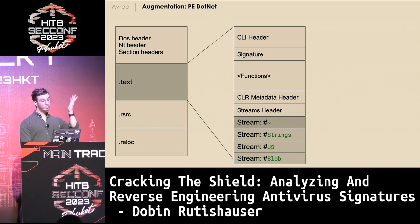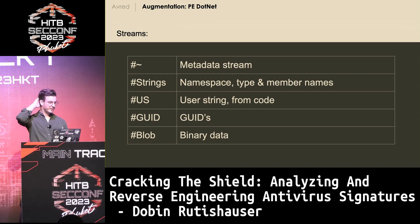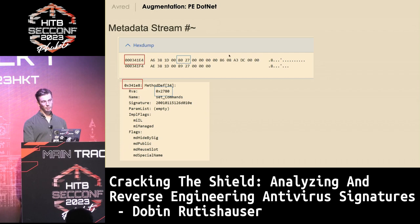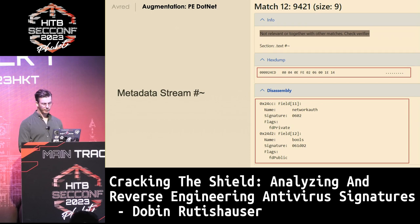There's also more data in .NET files called streams. The most important is probably the metadata stream, but we also have user strings, binary blobs, and normal strings, which are all indexed and can be queried using the library to get data with its file offset. If you have a match, without augmentation you don't know what it is, but with AV-RED augmentation you know it's a method definition of 'SetCommands' or network auth fields.